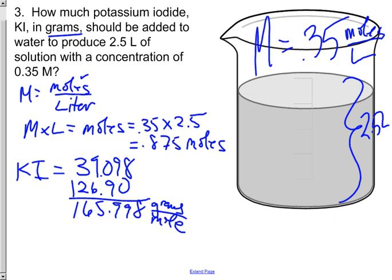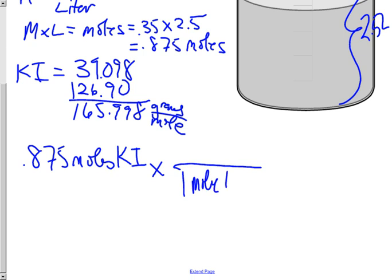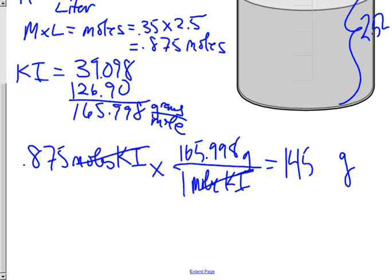Last step is going to be to say we want 0.875 moles of KI. Each one mole of KI has a mass of 165.998. So our moles of KI will cancel out and we're left with grams. And our final calculation would be 145.25 grams of potassium iodide to make our solution.